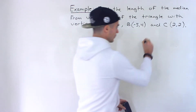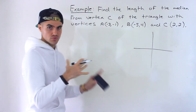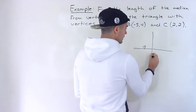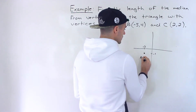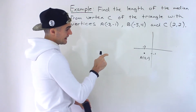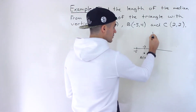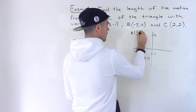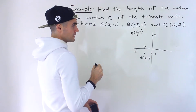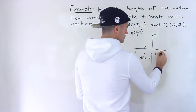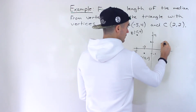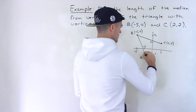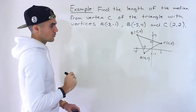So first thing I'm going to start off with is a diagram just so we can visually see where we're going with this. We got A at negative 3, negative 1, so that's going to be over here. And then we're going to have B at negative 5 and 4, so negative 5 would be over here, and positive 4 is up here. This isn't necessarily to scale, but just a rough drawing of what we're working with. Then we'll have C at 2 and 2, so that's going to be over here. If we connect everything, that's the triangle we are working with.